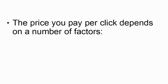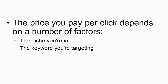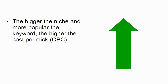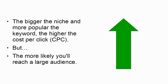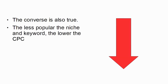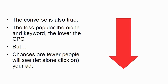The price that you're going to pay for each click depends on a number of different factors. It depends on the niche that you're in, the keyword that you're targeting, and how many other marketers are targeting that niche or keyword. The bigger the niche and the more popular the keyword, the higher the cost per click, otherwise known as CPC. The converse is also true — the less popular the niche and keyword, the lower the CPC, but chances are that fewer people will see your ad, let alone click on it.